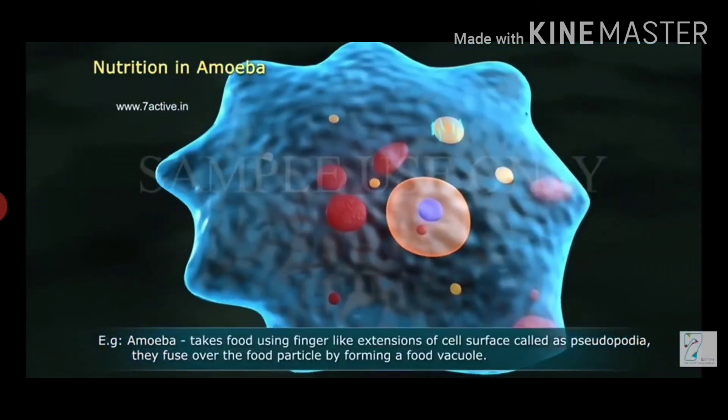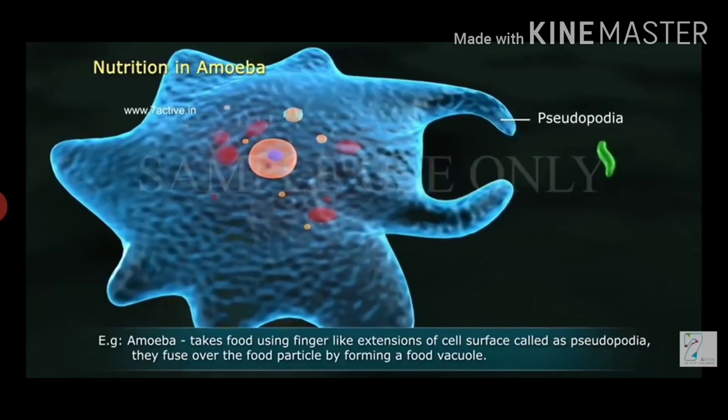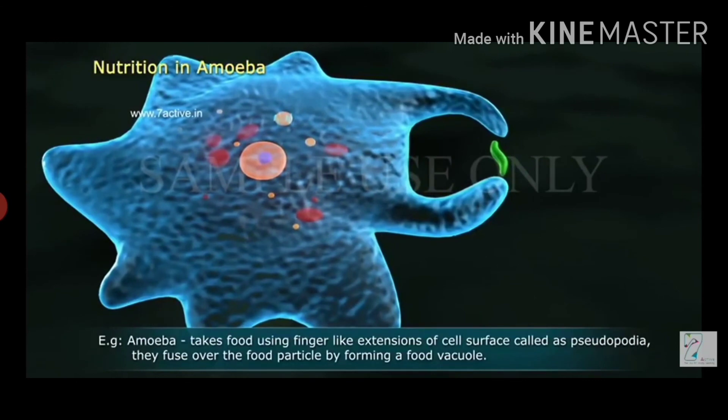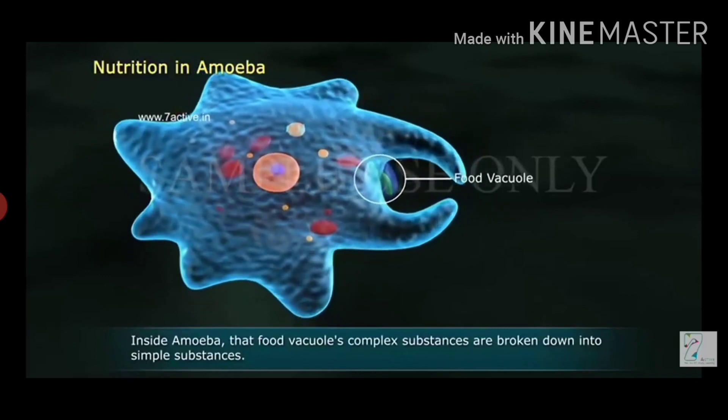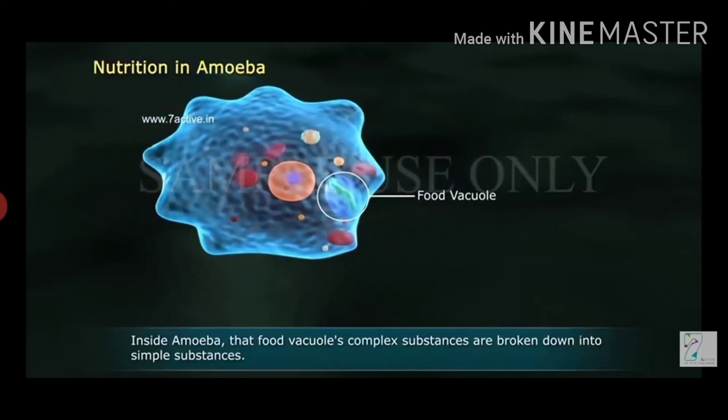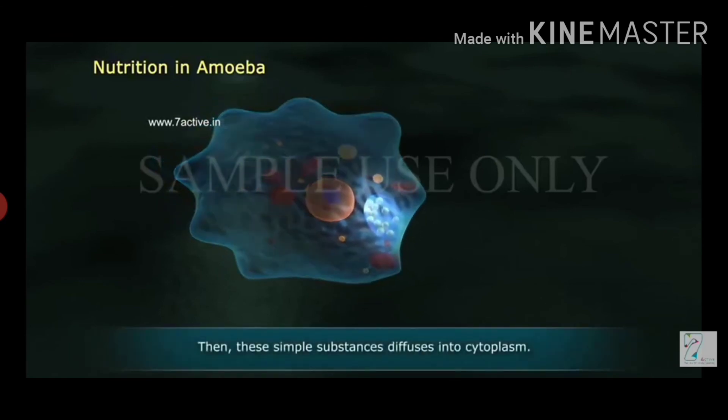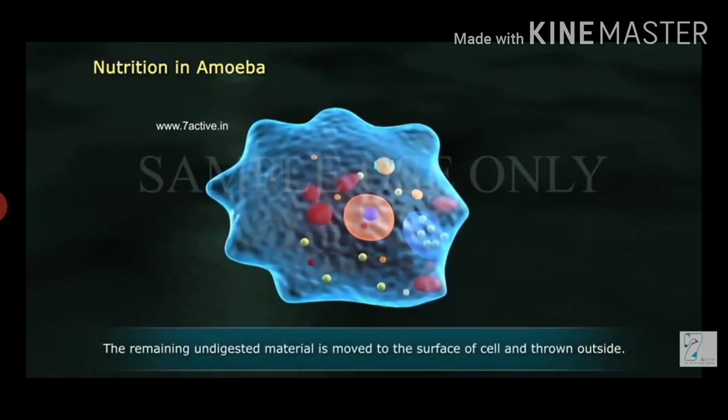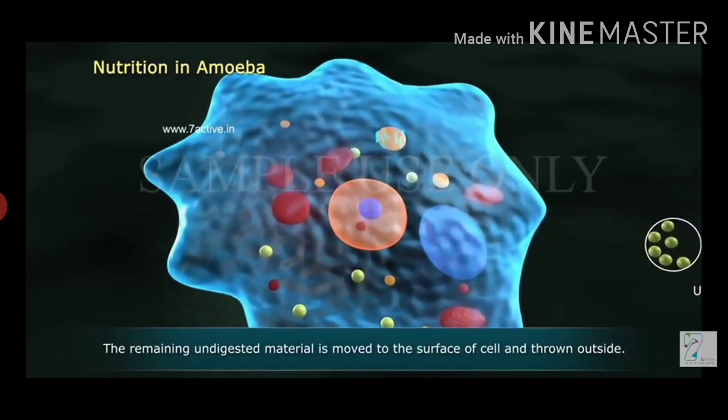Amoeba takes food using finger-like extensions of cell surface called pseudopodia. They fuse over the food particle by forming a food vacuole. Inside amoeba, complex substances are broken down into simple substances. Then these simple substances diffuse into cytoplasm. The remaining undigested material is moved to the surface of the cell and thrown outside. Thank you.